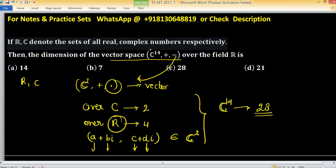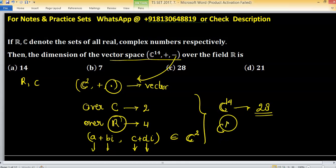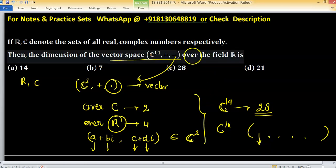If this is forming a vector space, take an element. How will an element of C^14 look? An ordered tuple of 14 constituents, and for each constituent you are independent at two choices. According to this, the dimension of this vector space over R is 28.